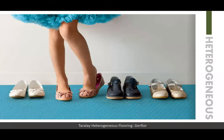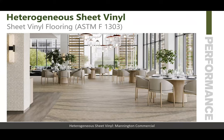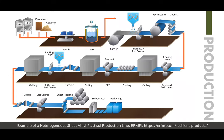Heterogeneous flooring is basically a layered process. Its performance standard is ASTM F1303. Production uses plastisol — a liquid mixture of PVC dispersion, plasticizers, and fillers with additives — that has the consistency of a paste. The paste is applied by a coating process and transformed into solid state by heating, called jellification. Heterogeneous can also be calendared, similar to homogeneous sheet vinyl, but has multiple layers that come together in the product.